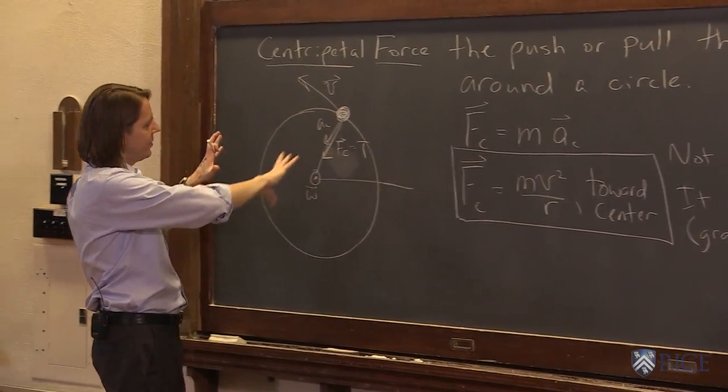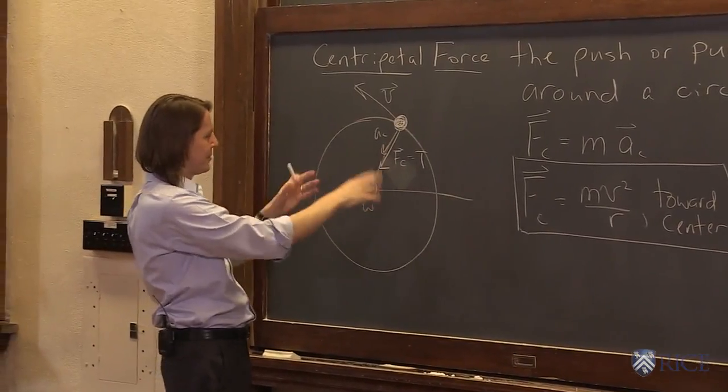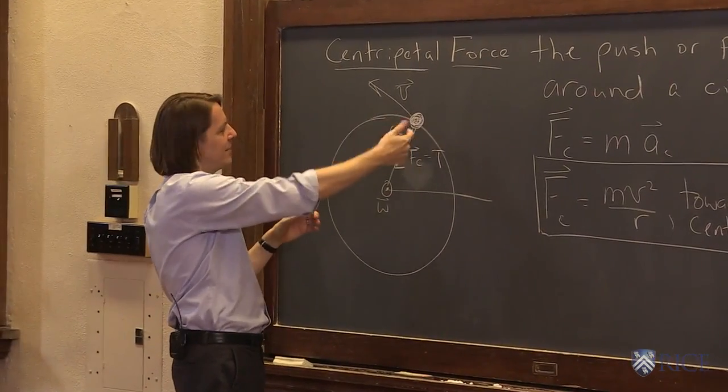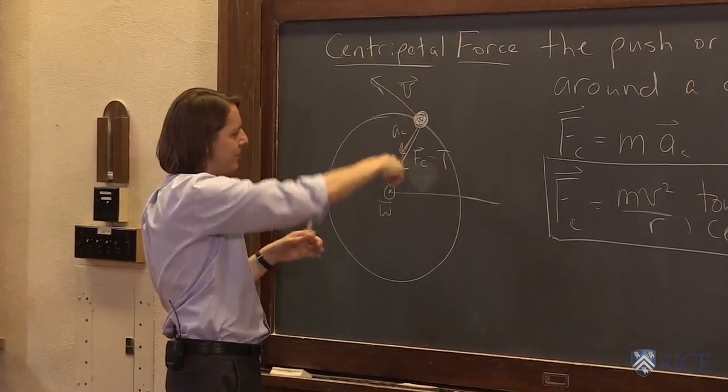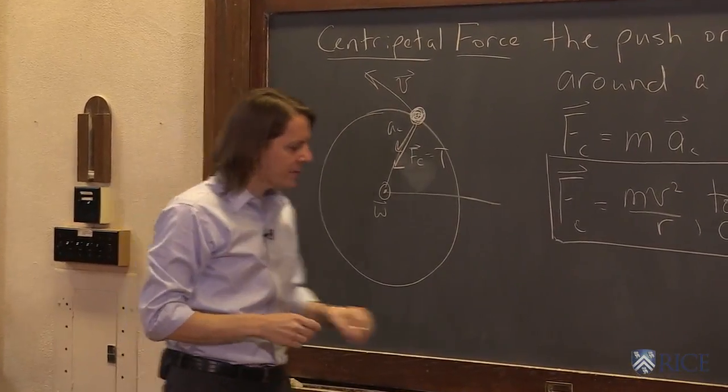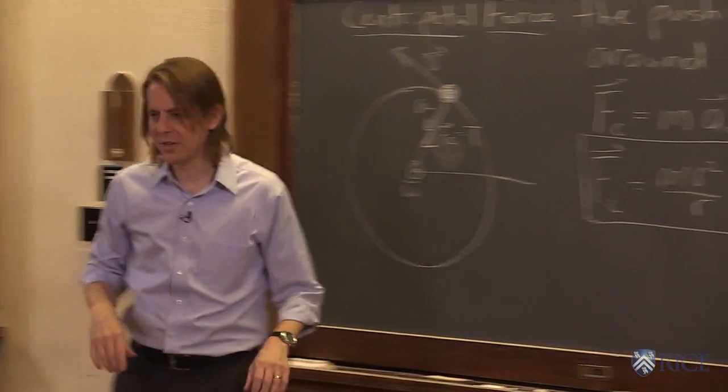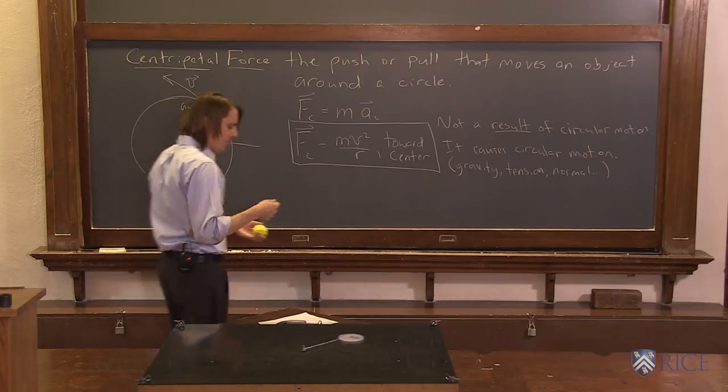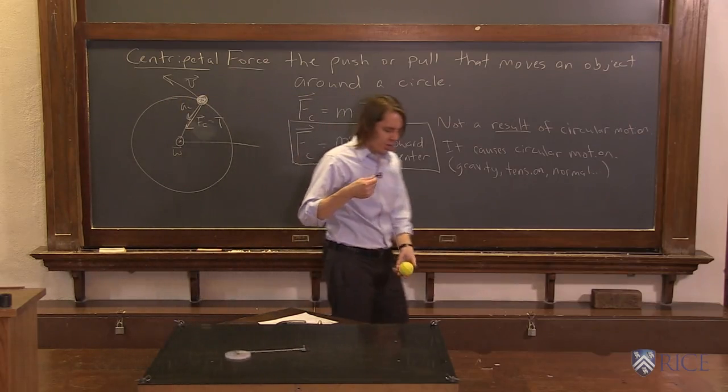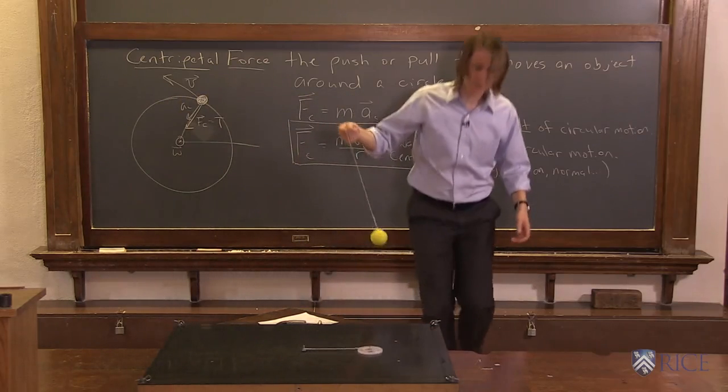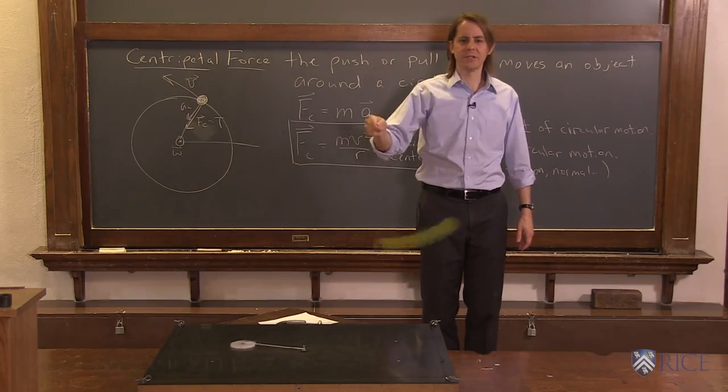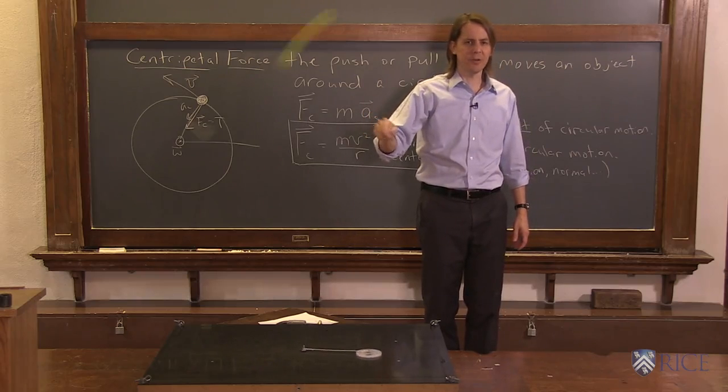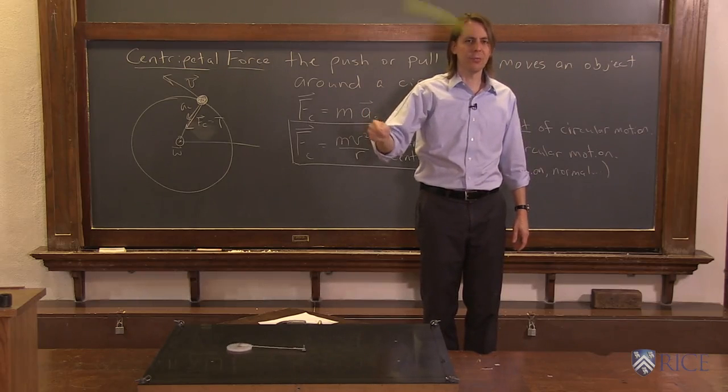And now that we have all these vectors laid out—we have the velocity, the instantaneous velocity, the acceleration, the force, omega, all these—we can actually answer a question that comes up a lot in circular motion. Commonly asked question: you're spinning a ball on a string.